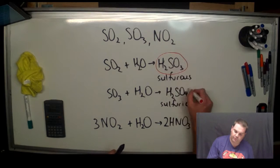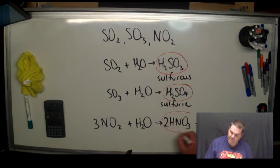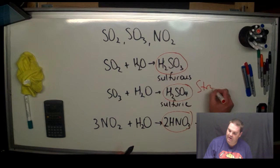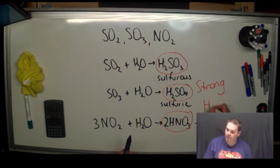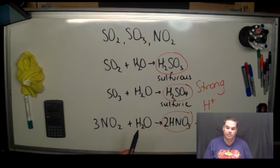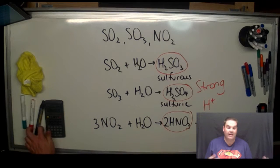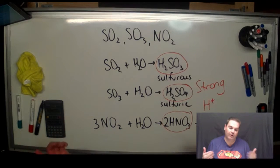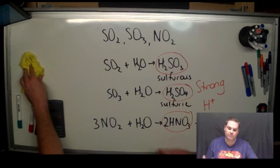So all three of these, sulfurous acid, sulfuric acid and nitric acid are all strong acids. Which means they give a lot of H+ ions when they're in solution. That therefore means you're going to have a very low pH below 5.6, which is acid rain.